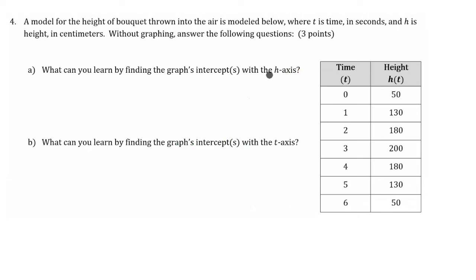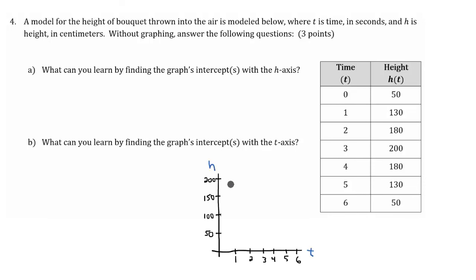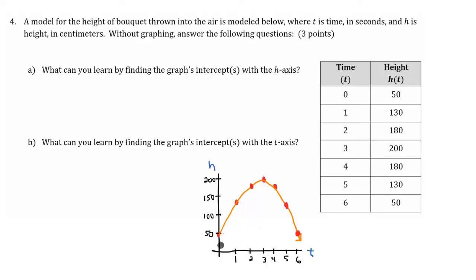Question number four focuses on intercepts. Part A is asking us to figure out what we know about an intercept on the h-axis. To help see what's going on, I'm going to graph this. I set up a graph and now I'm going to plot all my points from the table. I'm going to run a line through all these to show the shape of the graph. My vertical axis is going to be h, which represents height, and my horizontal axis is going to be t for time. Part A is asking us for the h-intercept, and we see that the graph intercepts it at 50.